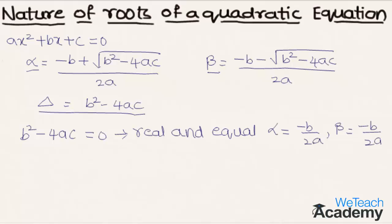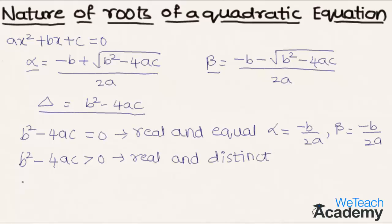We observe that alpha and beta are equal in this case. When delta is greater than zero, the roots are real and distinct. And when delta is less than zero, that is negative, the roots are imaginary.